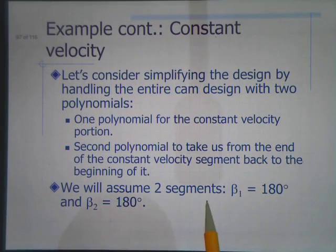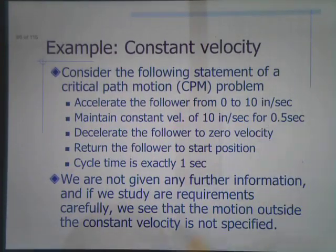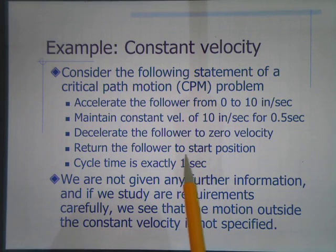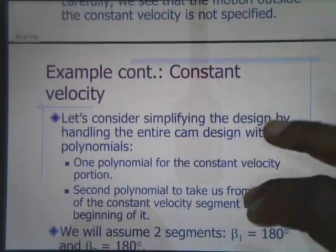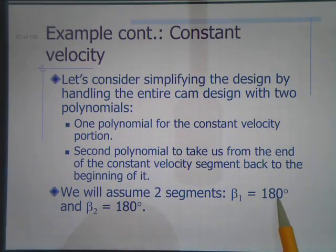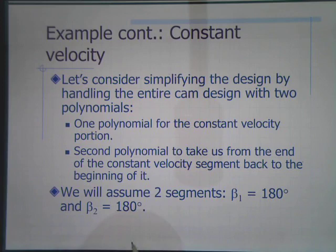We will assume two segments, two polynomials, where beta one for the first polynomial is 180 degrees because that's exactly one half the time. Every cam design involves 360 degrees of motion. Since our cycle time is one second and the constant velocity is for half a second, if one second equals 360 degrees, then half a second equals 180 degrees. Both betas are equal: 180 for the constant velocity polynomial and 180 for the return polynomial.